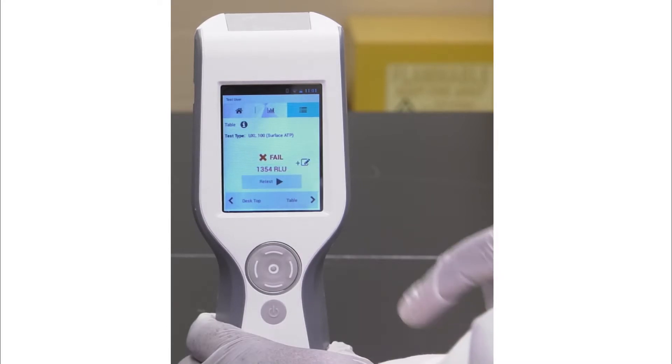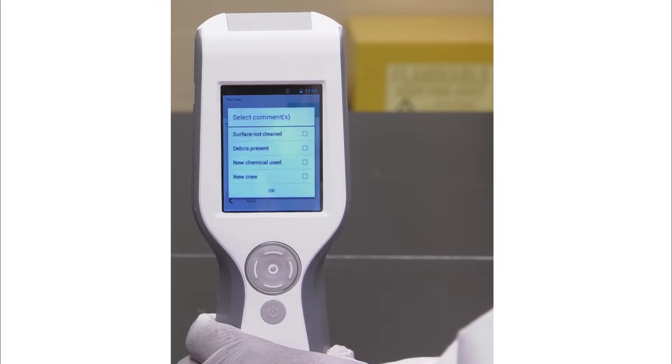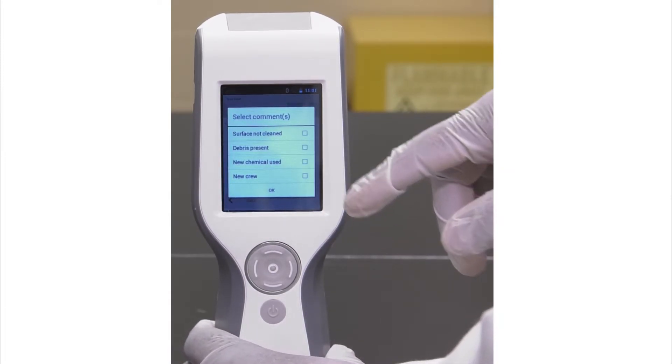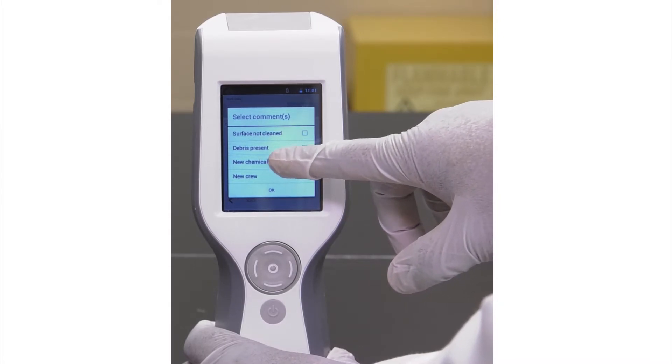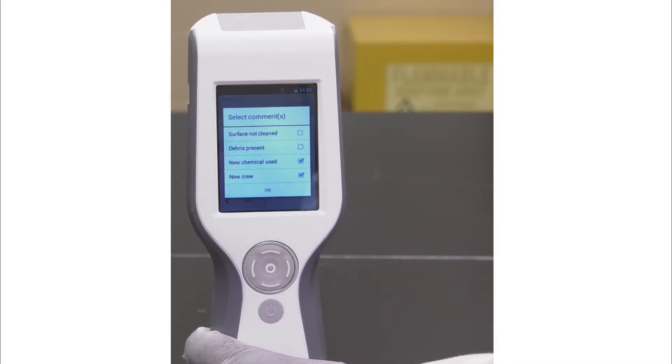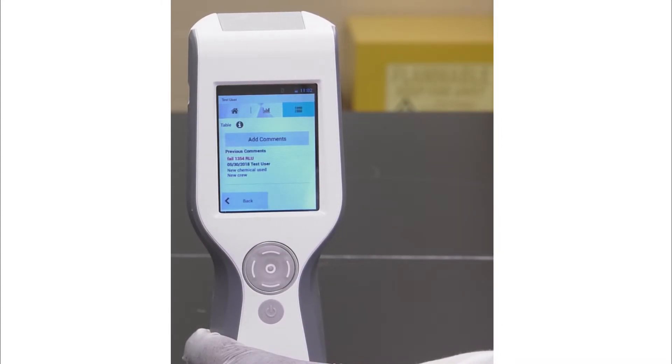Once the test is completed, you may press the comment icon. Press add comments and you may select any comments that apply, such as new chemistry used and new crew. Comments are preset from within the software. Selected comments will also appear on the results report in the 3M Cleantrace software.